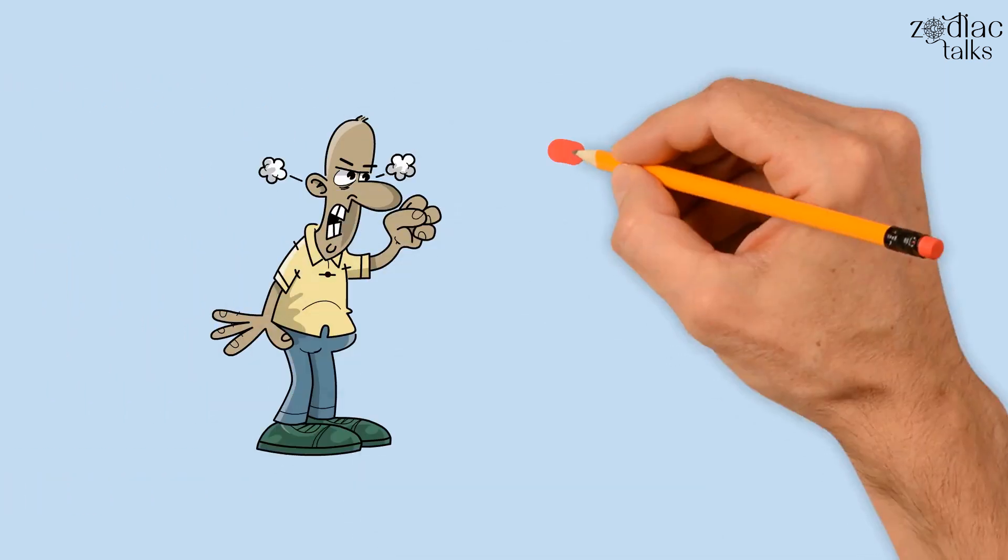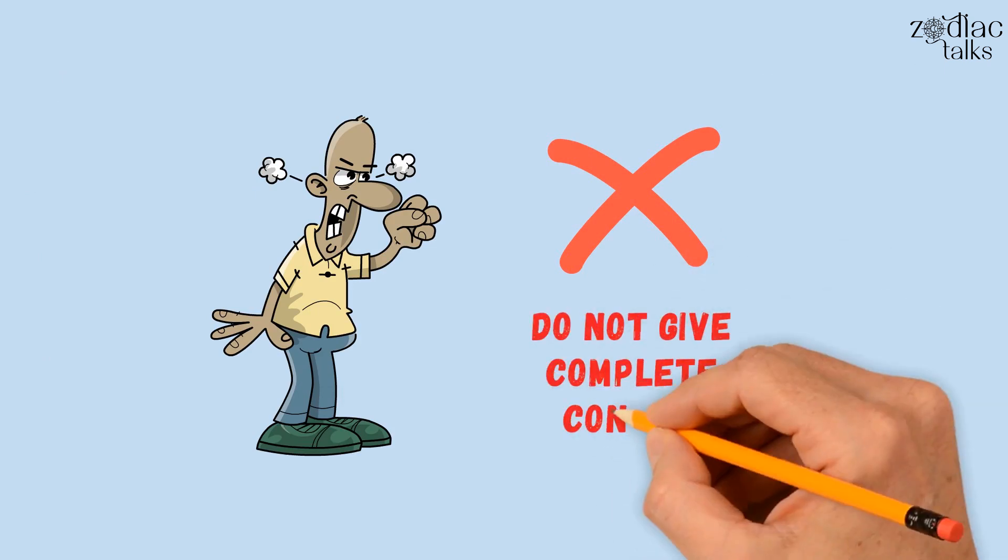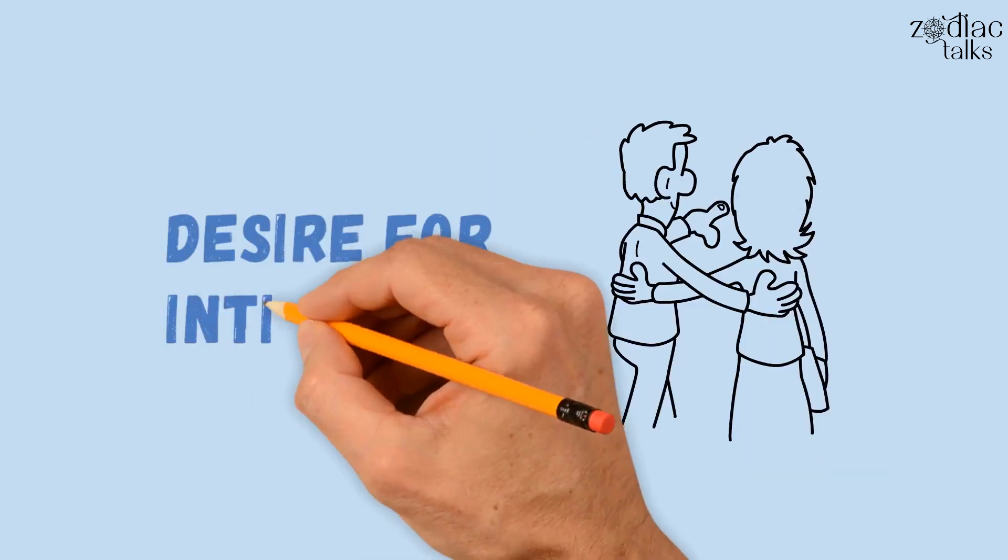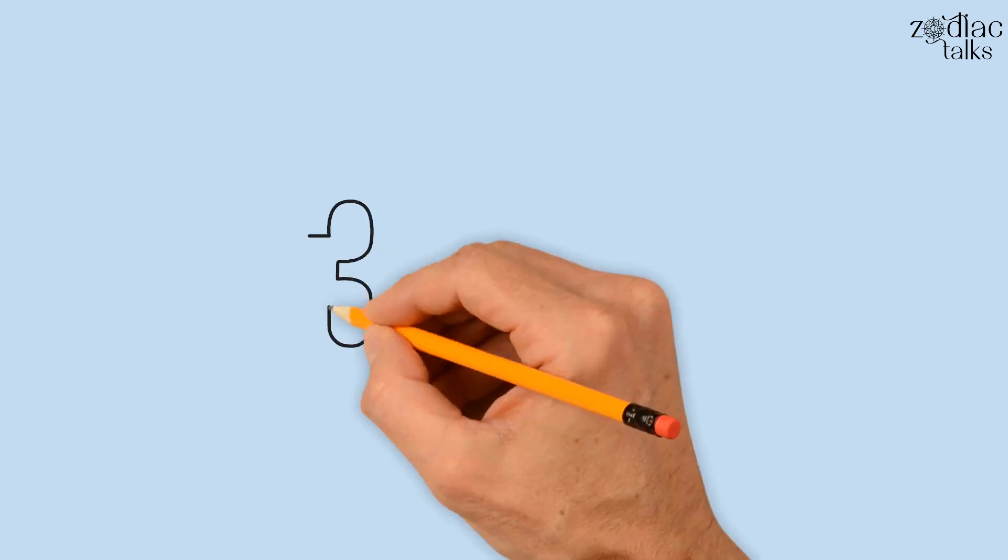They can explode if you say no to getting intimate with them or do not give them complete control. They try every trick to seduce their partner, and their desire for intimacy is so intense that they can go to any level to fulfill it.